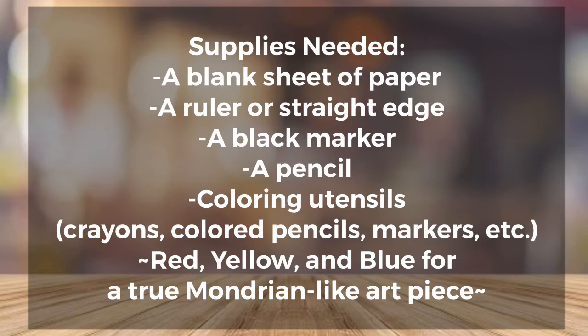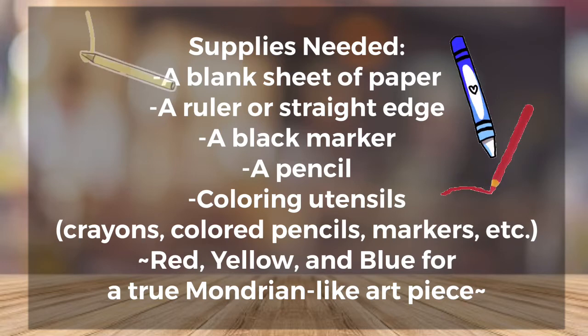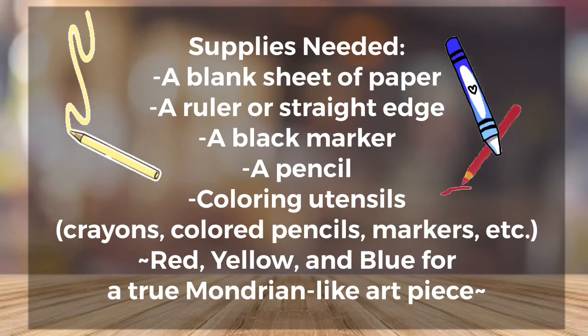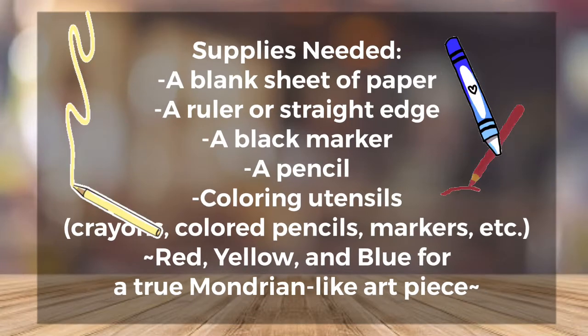To create a true Mondrian style art piece, you would use the primary colors of red, blue, and yellow, as well as black. But if you don't have those exact colors, any colors will do.